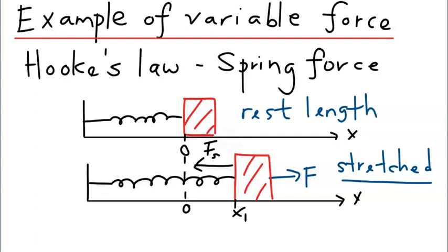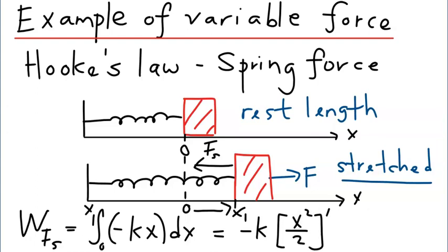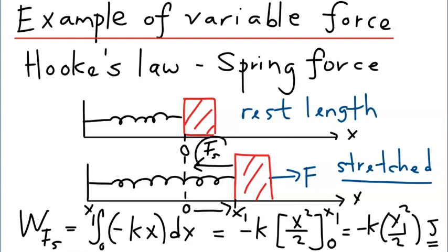So how do we calculate the work done by this spring force? Using the definition introduced earlier, the work done by the spring force as the object moves from x equals 0 to x equals x1 is given by the integral of minus Kx dx, with a lower limit of 0 and upper limit of x1. We can take K out as a constant, and integrating x dx gives x squared over 2, evaluated from 0 to x1. Substituting the limits, we get negative K times x1 squared over 2, in units of joules.